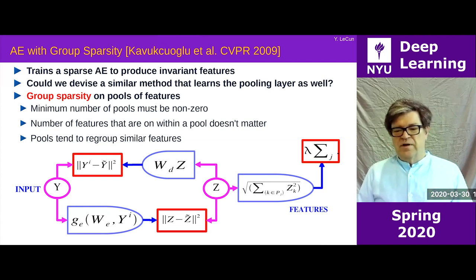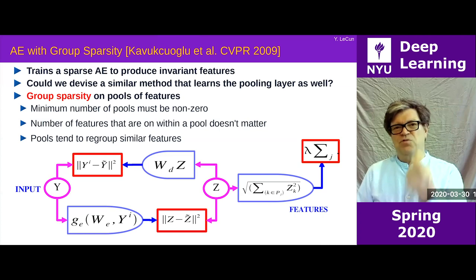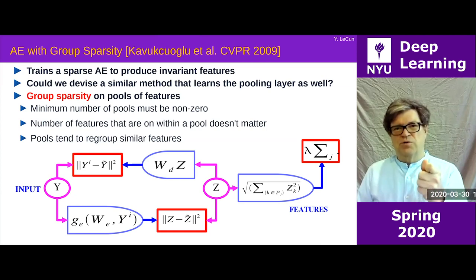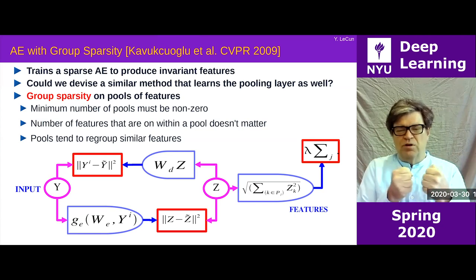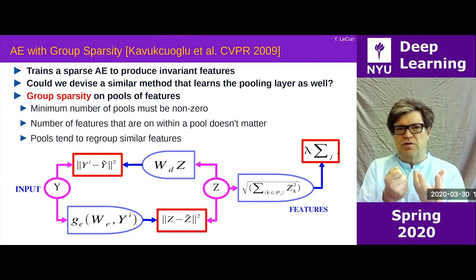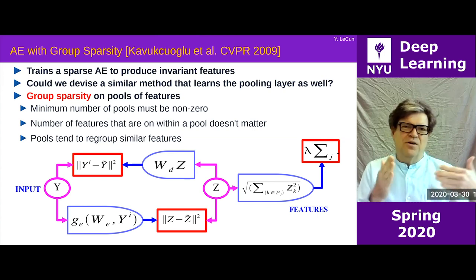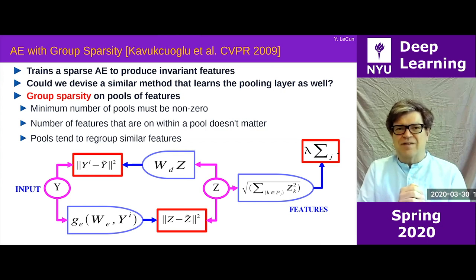This tends to turn off the maximum number of groups — the system wants the smallest number of groups to be on at any one time. But within a group, because it's an L2 norm, it doesn't care how many units are on within that group. This forces the system to group together features that turn on simultaneously. If you have similar feature extractors or filters, they'll group themselves within a pool because they tend to be activated together — the best way to minimize the number of groups activated at any time.